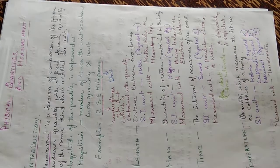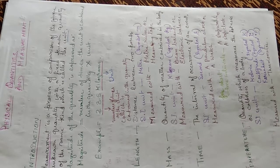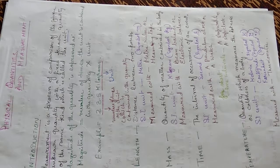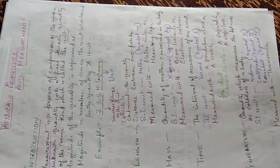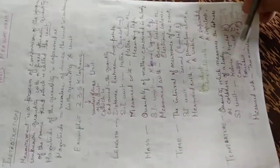Then temperature. Temperature is a quantity which measures the hotness or coldness of the body. Its SI unit is Kelvin, symbol is capital K. Centigrade, symbol is degree C. Fahrenheit, symbol is degree F. It is measured with a thermometer.